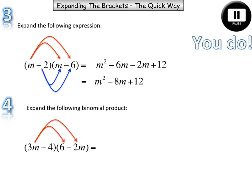All right. Our last binomial expansion is 3m times positive 6. 3m times 6 is 18m. And 3m times negative 2m is negative 6m squared.